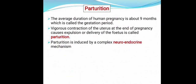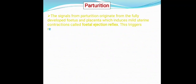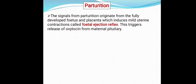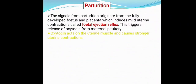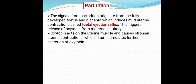Parturition is induced by a complex neuroendocrine mechanism. The signals for parturition originate from the fully developed fetus in the uterus and placenta, which induce mild uterine contractions called the fetal ejection reflex. This fetal ejection reflex triggers the release of oxytocin from the maternal pituitary. Oxytocin acts on the uterine muscles and causes stronger uterine contractions, which in turn stimulate further secretion of oxytocin.